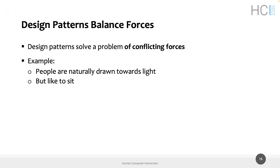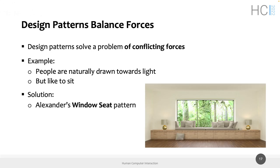We can also see design patterns as a tool to balance forces. Design patterns solve a problem of conflicting forces, typically. For example, we know that people are naturally drawn towards light, but people also like to see. Imagine in this room there is a window and some seats in the middle. When I enter the room, I have two conflicting needs: I would like to sit down, but I'm also naturally drawn towards light. Design patterns are a way to solve these conflicting needs. For example, the Alexander window seat pattern solves these two conflicting needs by having seats directly inside a window. It's a design pattern that is still adopted in building houses today.